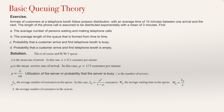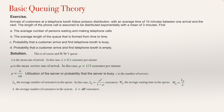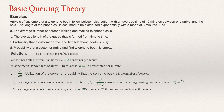L is the average number of customers in the system — that is question A: the average number of persons waiting and making telephone calls. L is given by L equals lambda times W, where lambda is the average rate of arrival — the Poisson distribution parameter. W is the average waiting time in the system, while WQ is the average waiting time in the queue. W is the total average waiting time including making telephone calls, so this formula solves question A.